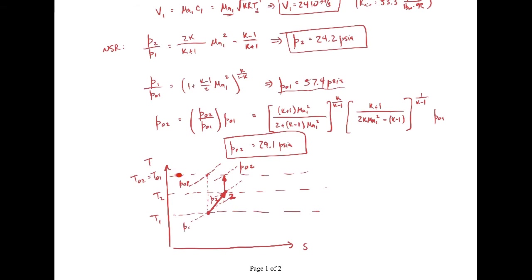The stagnation temperature stays the same, so we're still at the same stagnation temperature line. But the stagnation pressure has decreased. You can see the entropy is higher at state 2. So the TS diagram shows the shock wave increasing entropy, followed by isentropic deceleration to stagnation conditions with a smaller stagnation pressure than we started with.